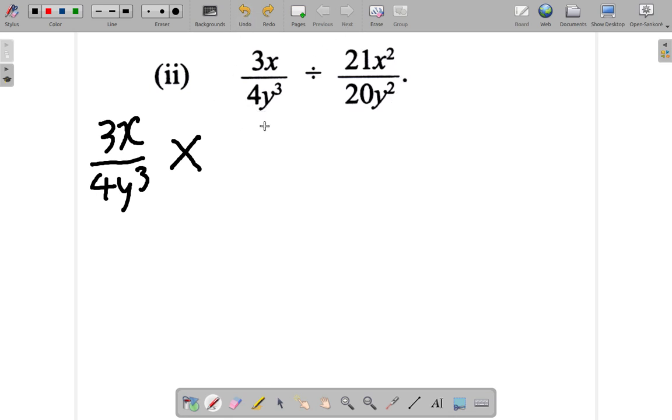So you're going to put this at the top and this at the bottom. You'll find the reciprocal. So what you have is 20y squared over 21x squared.